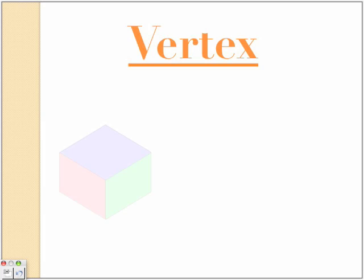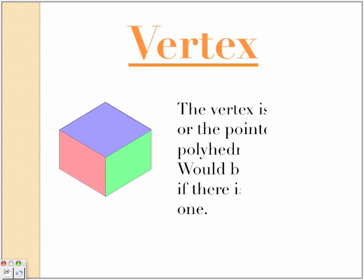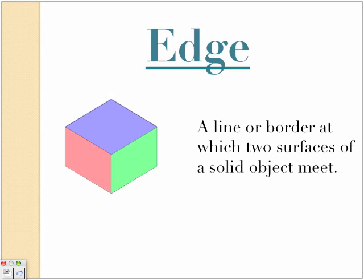And the vertex. The vertex is a corner or the pointed parts of a polyhedron. The vertex would be called vertices if there are more than one. So like here, here, here, here, here, here, here, and there. Next, the edge. The edge is a line or border out of which two surfaces of a solid object meet. Like right here, that's the edge. And that. So we're going to try those things.